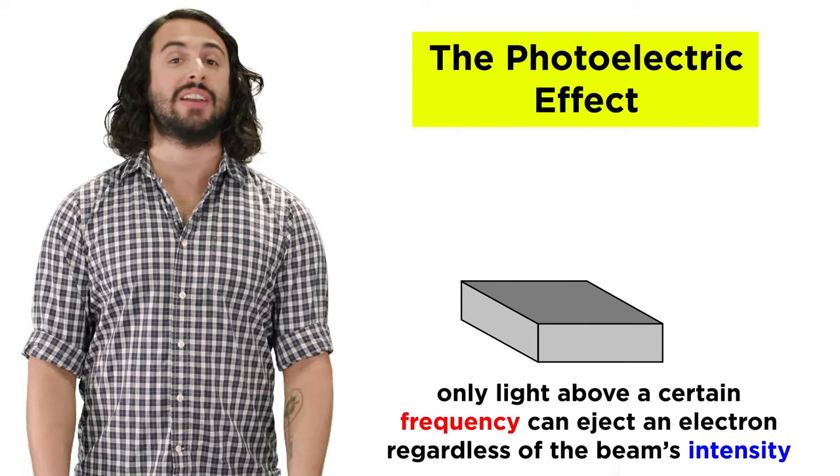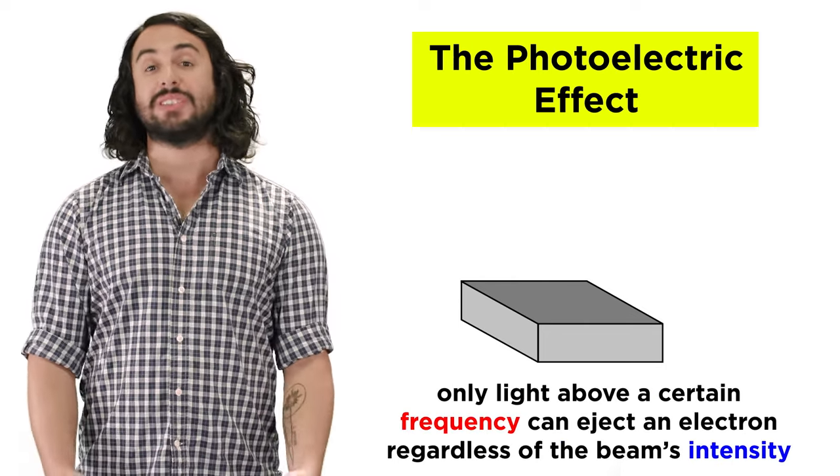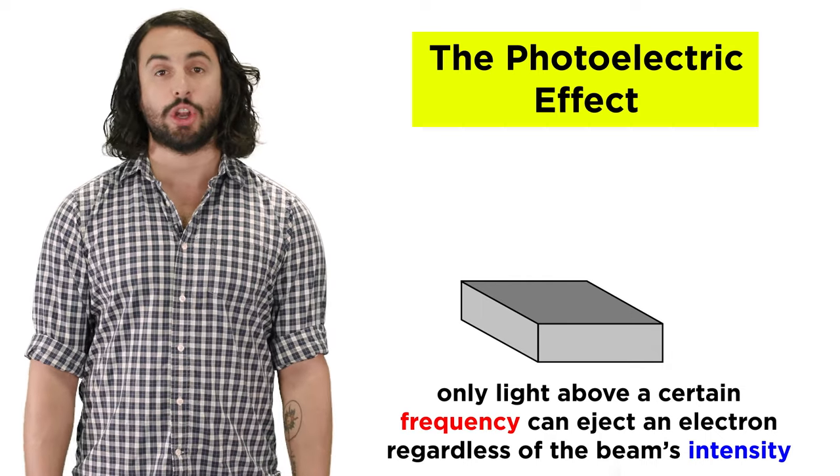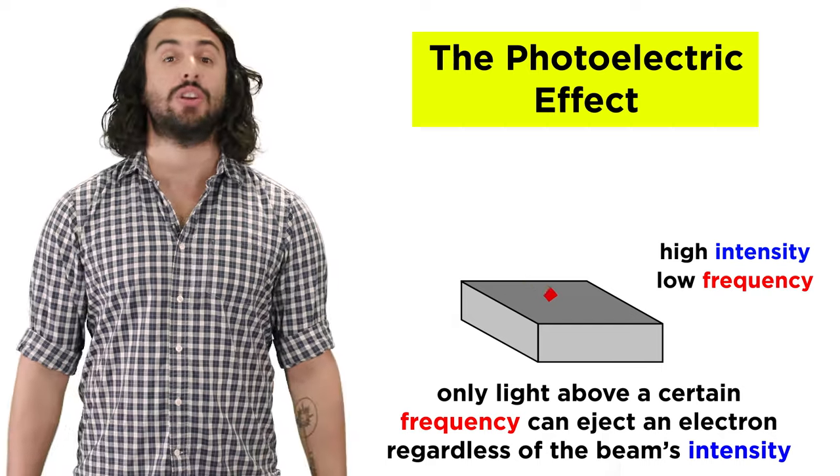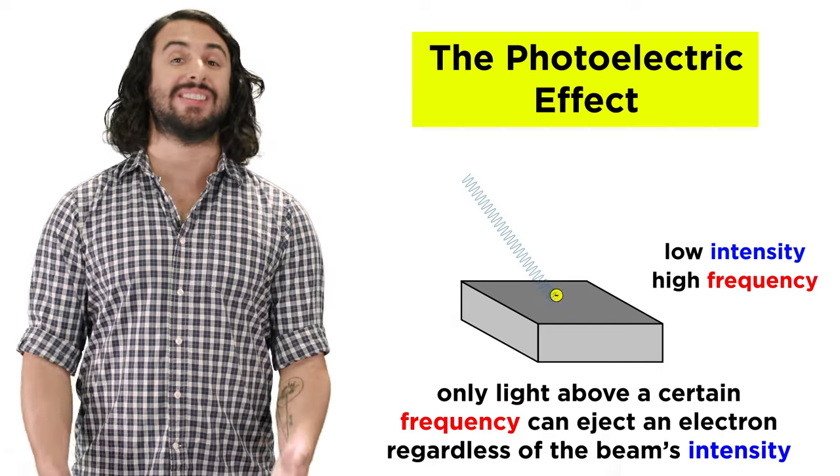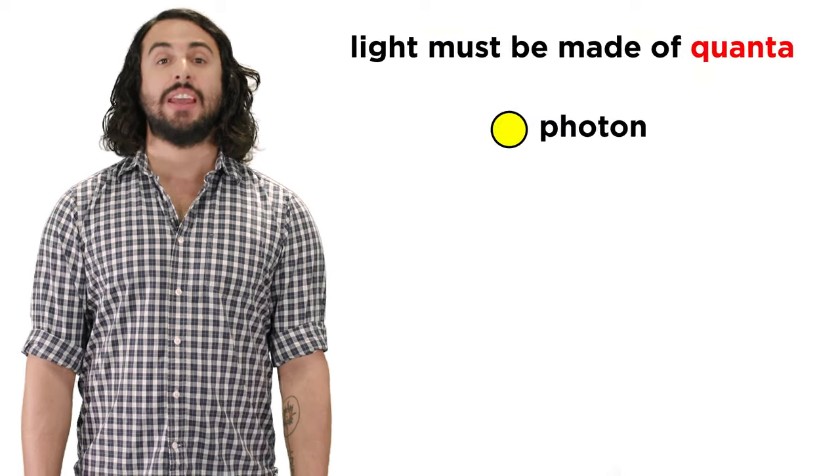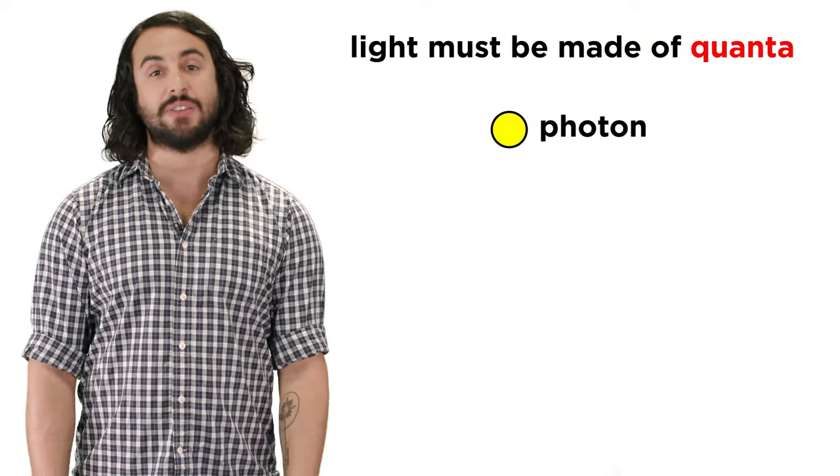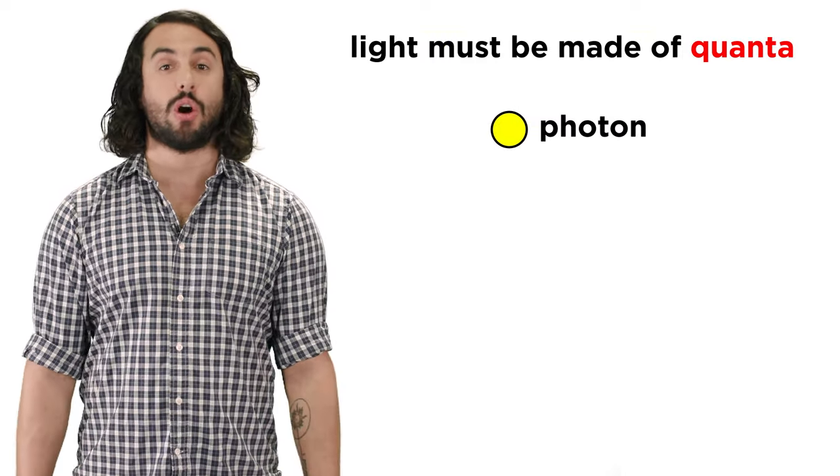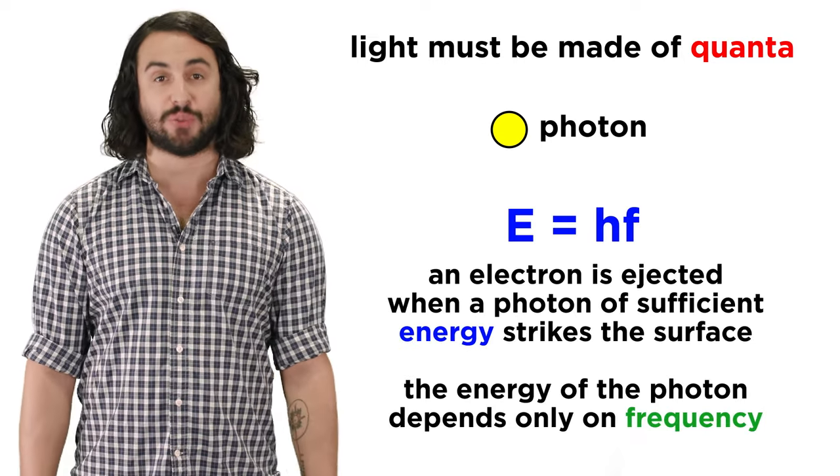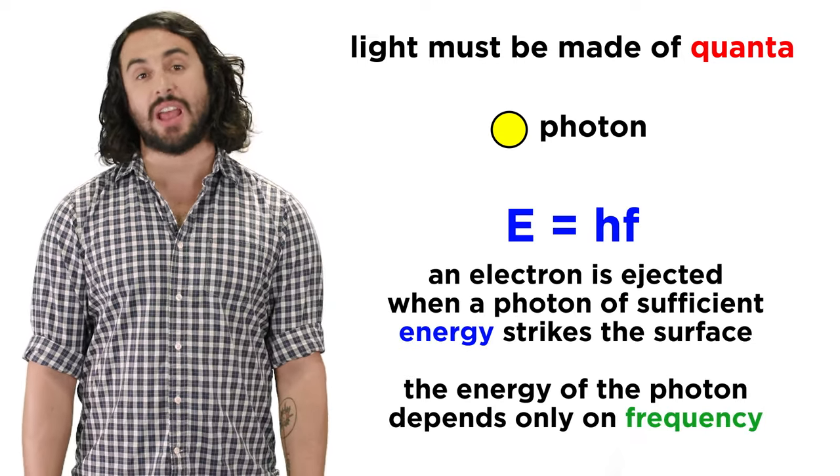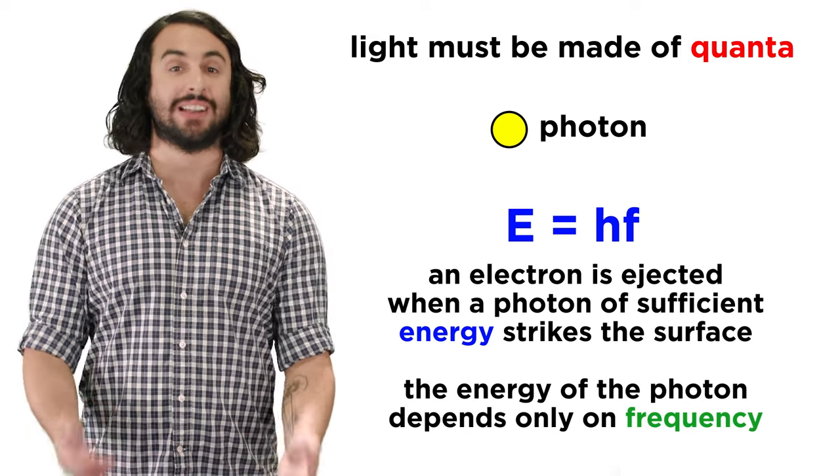If you have familiarized yourself with this concept, we will simply recall that Einstein's work showed that only light above a certain frequency could eject an electron, regardless of the intensity of the beam, and for this reason he proposed that light was comprised of individual quanta called photons, whereby it was an individual photon of sufficient energy equal to H times F that was able to eject an electron.